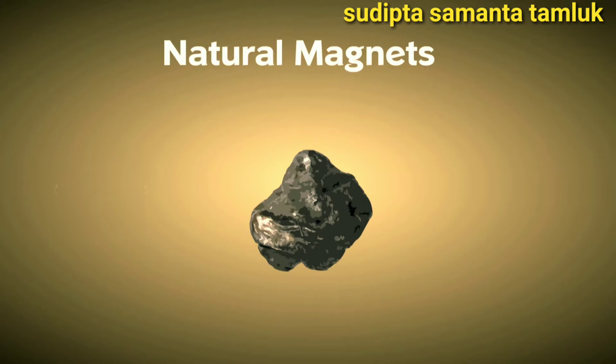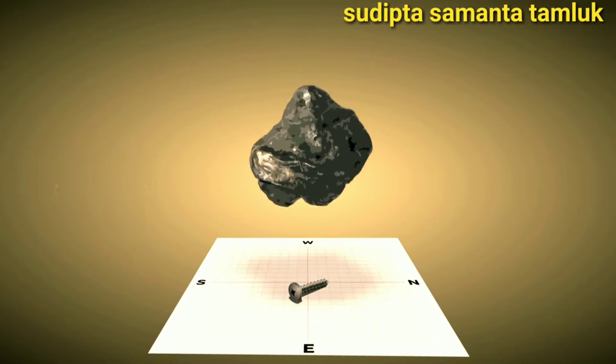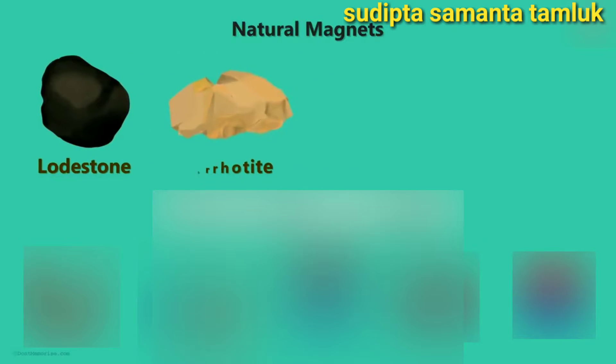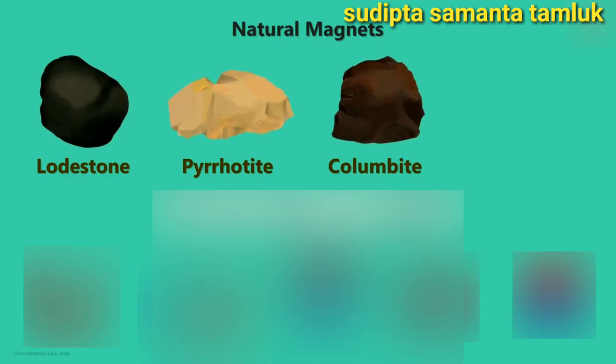Naturally occurring magnets are irregular in shape and are weak. Loadstone is the strongest naturally occurring magnet. It is black in colour and was the first magnet ever discovered. Some other naturally occurring magnetic materials are pyrotite, columbite and even basalt has some magnetic properties.